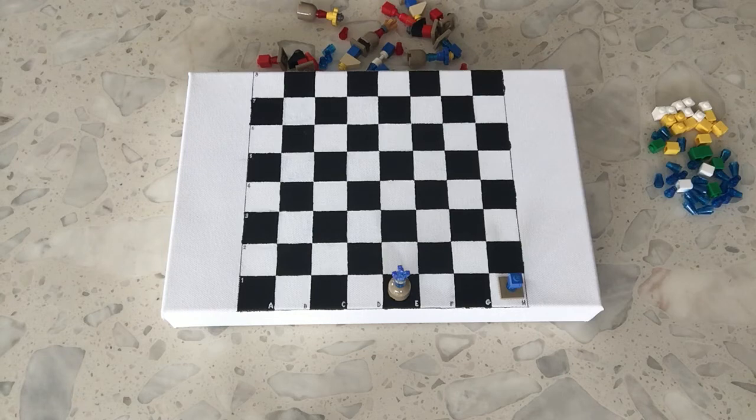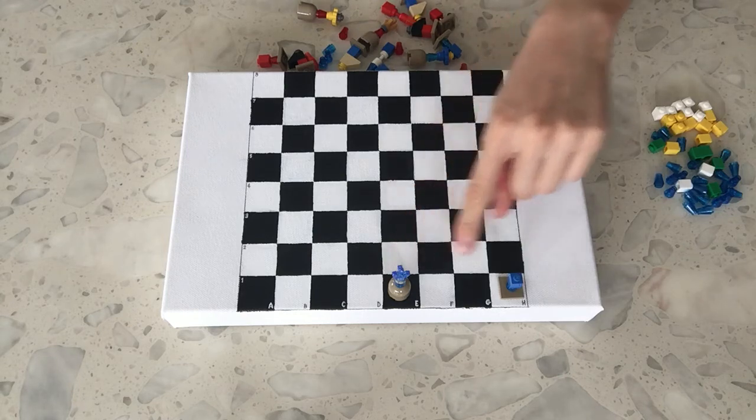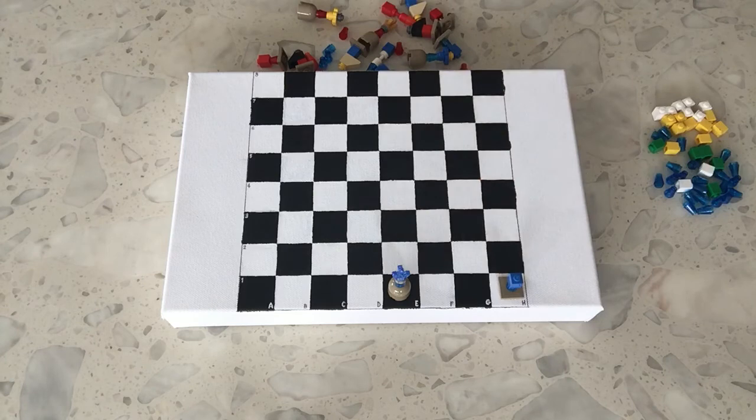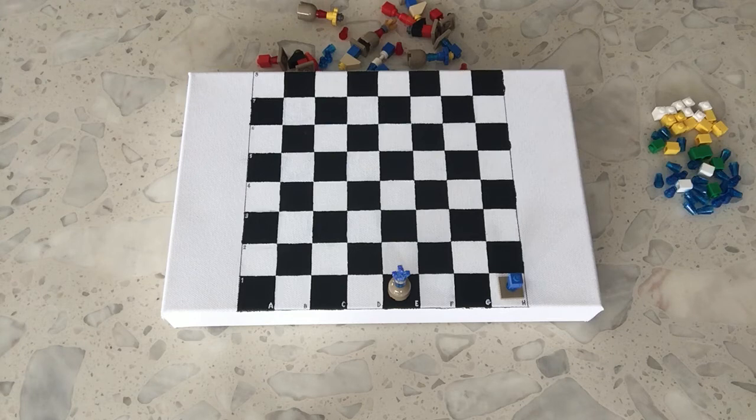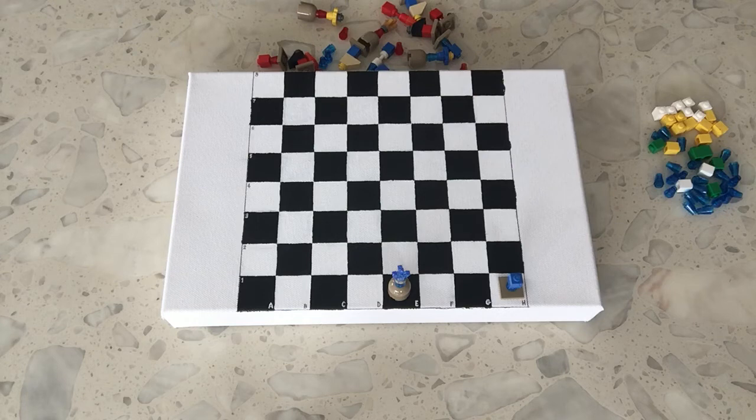And the king is unable to castle while moving through check or going into check. And you cannot castle, you cannot do castling when your king is in check on that spot. So those are the requirements for castling.